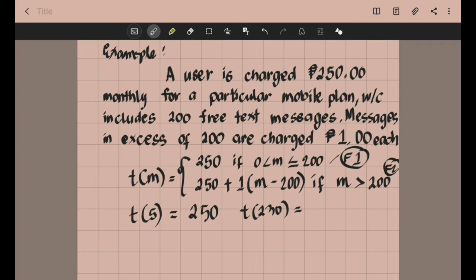Therefore, T of 230 equals 250 plus 1 multiplied by 230 minus 200. So we have 250 plus 30, which equals 280 pesos if they sent 230 messages.